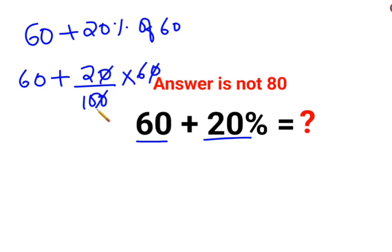So the zeros are cancelling. You are left with 60 plus 12. 2 into 6 is 12.